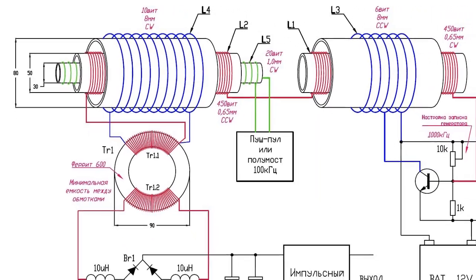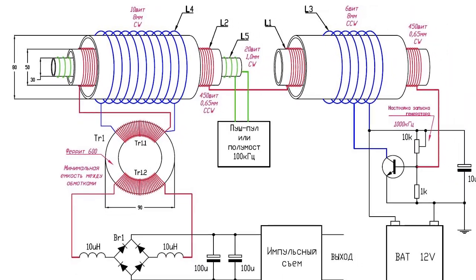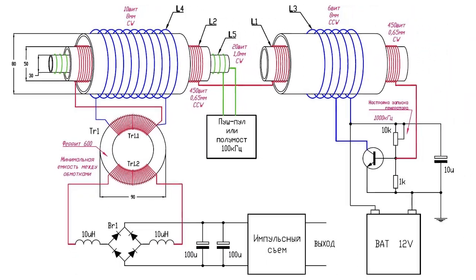However, the magnifying transmitter is a larger device meant to transmit power over greater distances. It works by creating a high voltage, high frequency current that can be transmitted through the air or ground. This current passes through a capacitor that stores energy until it is discharged in a powerful spark. The spark creates an electromagnetic field that can be harnessed to generate electricity.